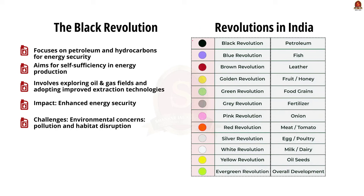The Black Revolution is centered on petroleum and hydrocarbons, aimed at improving India's energy security by increasing petroleum production and striving for energy self-sufficiency. This involves exploration of oil and natural gas fields coupled with adoption of improved extraction technologies. While it has led to enhanced energy security, the Black Revolution faces challenges — environmental concerns including pollution and habitat destruction accompany the extraction and utilization of fossil fuels.